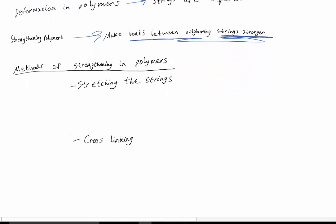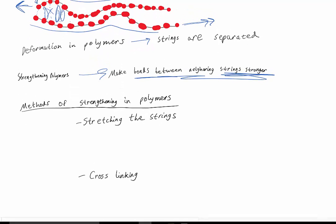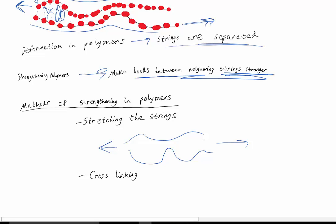The methods of doing this include, first, stretching the strings. So say we have strings arranged like this, and we stretch them like this. But not enough so that it breaks the bonds and plastically deforms it. We just stretch them so that they're now clumped closer together. So here versus here, it's closer together. There's stronger van der Waals bonds between the neighboring atoms because they're closer together.